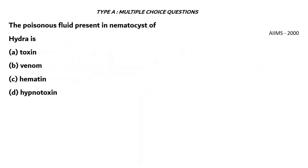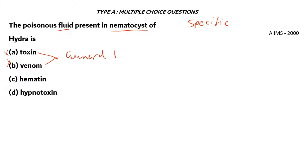Next question. The poisonous fluid present in nematocysts of hydra is: A. toxin, B. venom, C. hematin, and D. hypnotoxin. We're asked to find the specific name of the fluid present in nematocysts, which is the organ of hydra that poisons other creatures. Options A and B — toxin and venom — are incorrect, as these are general terms for anything that's poisonous and can be used interchangeably.